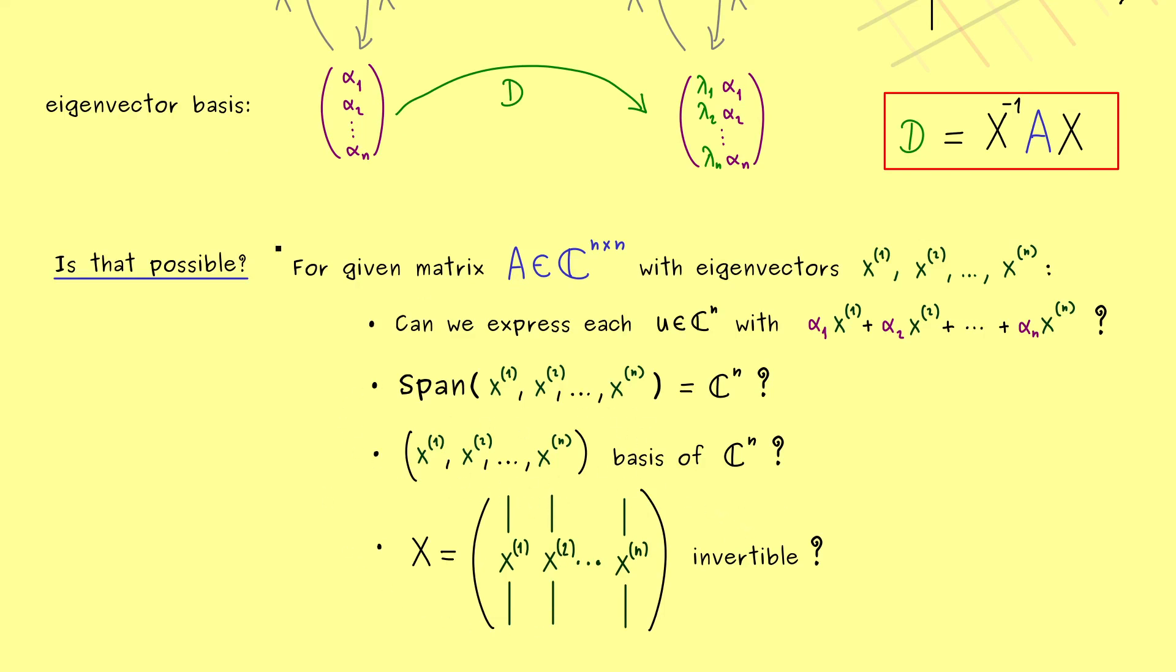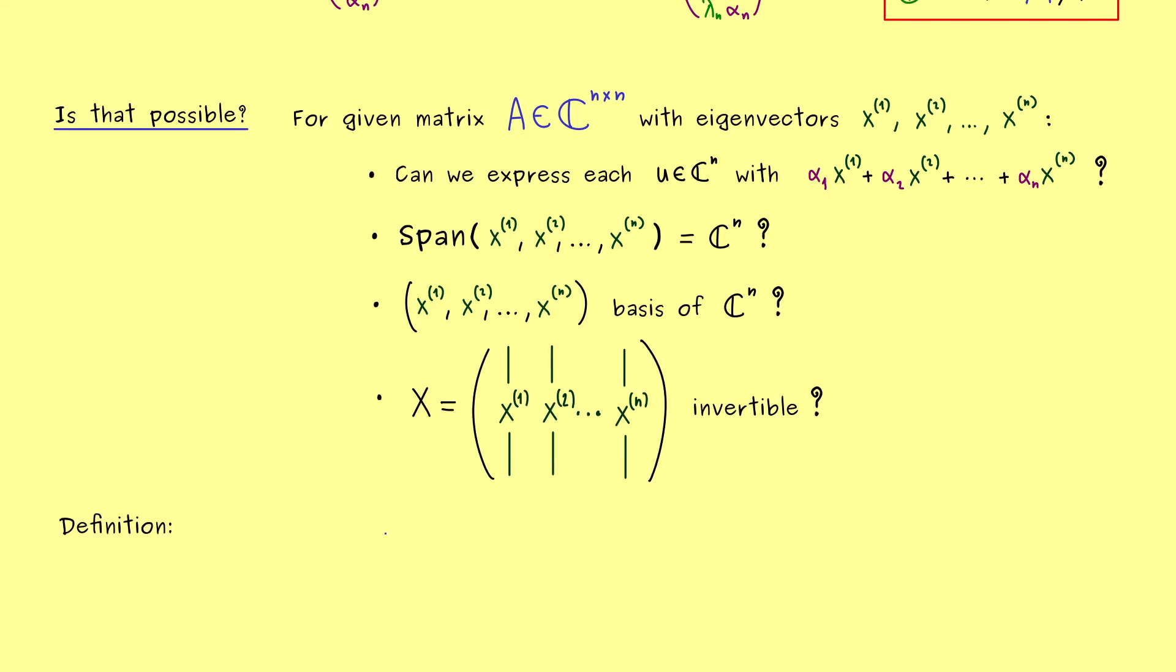Now as a reminder again, basis means the vectors here are linearly independent and they span the whole space. However, now this means, if you put these vectors into a matrix, and you know we usually call this matrix just X, then this matrix has to be invertible if and only if these vectors form a basis. In other words, we can also state the question here as, is X invertible?